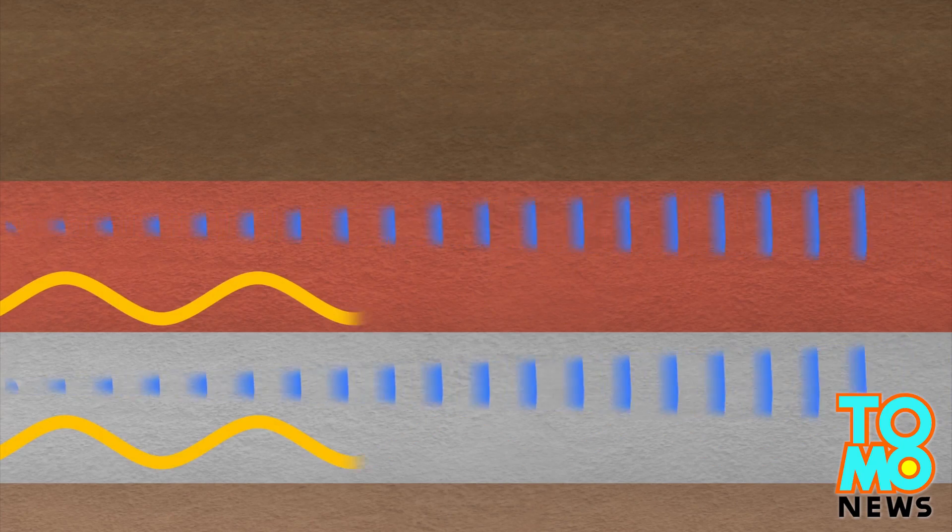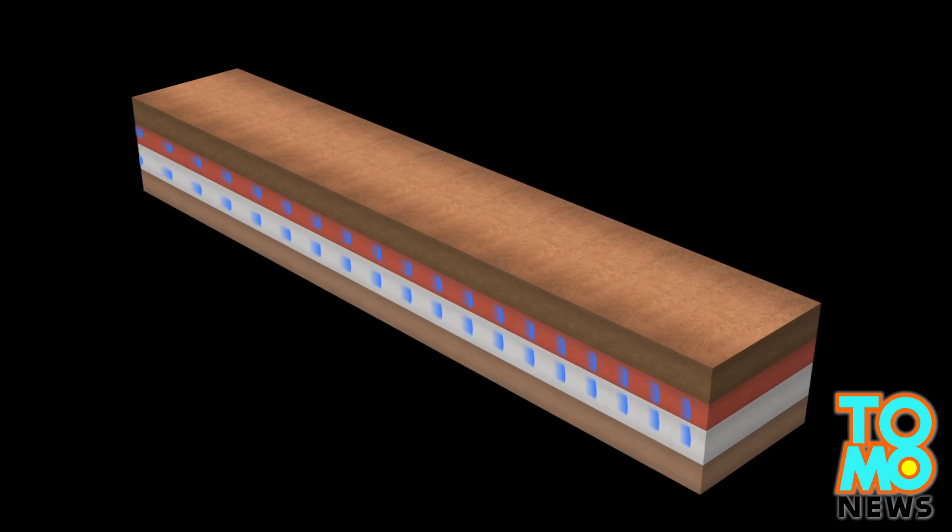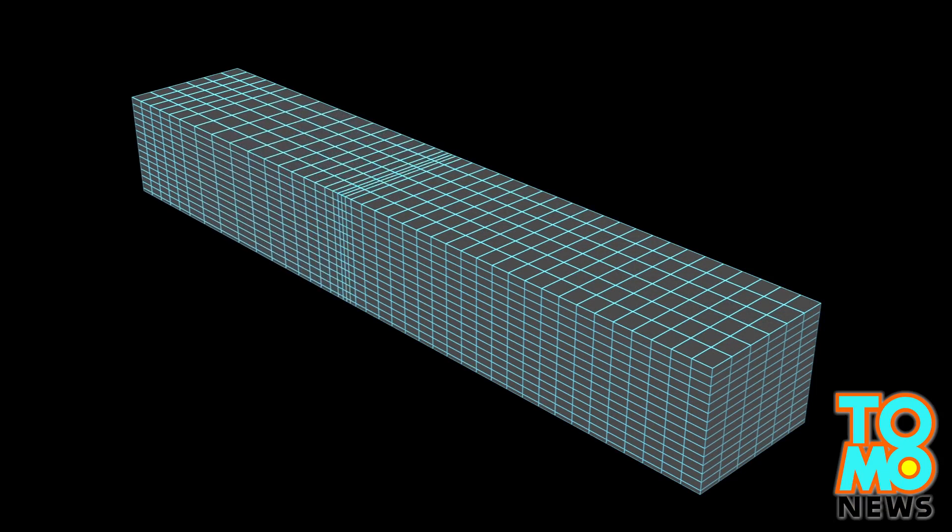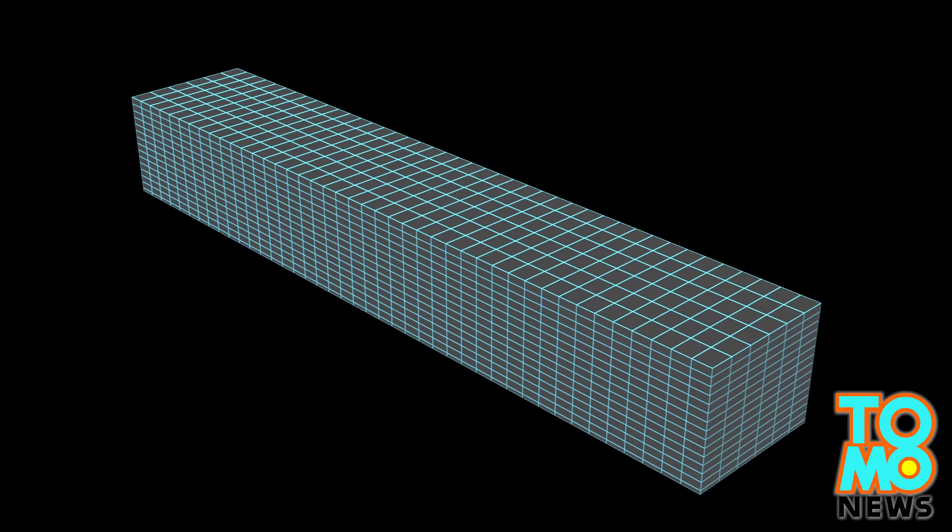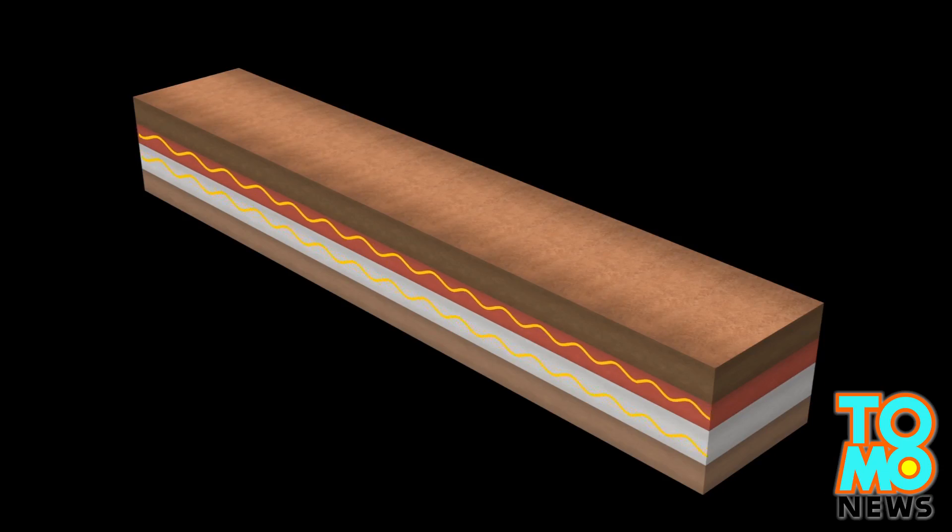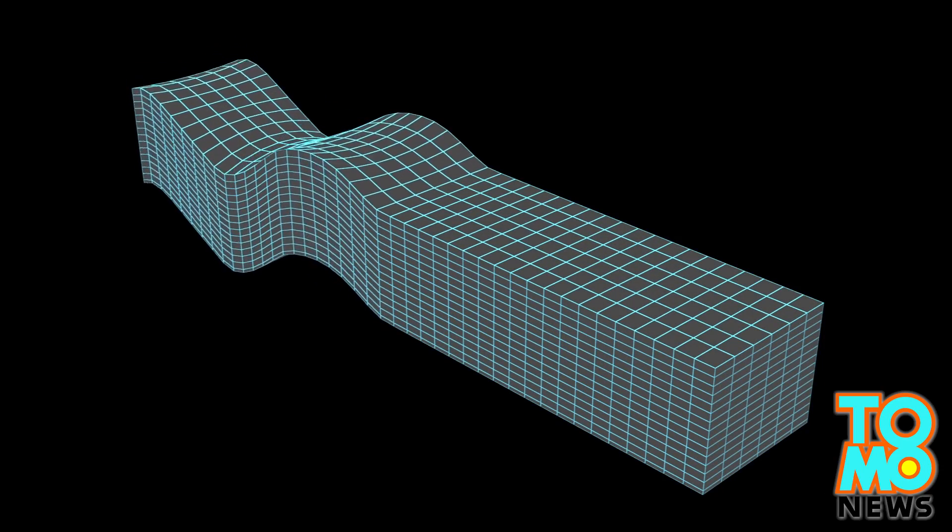Displaced plates in the fault line generate two kinds of seismic waves. P-waves travel faster, emitting a thunder-like sound as they push and pull rocks, while S-waves move more slowly but are much stronger than P-waves.